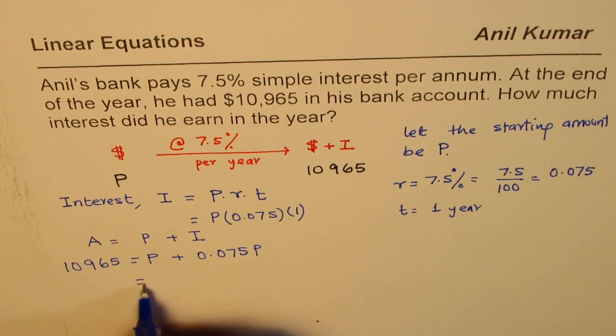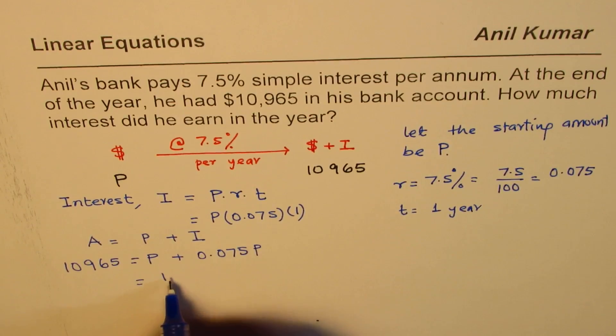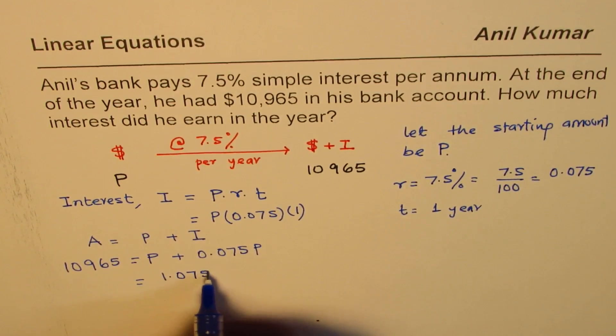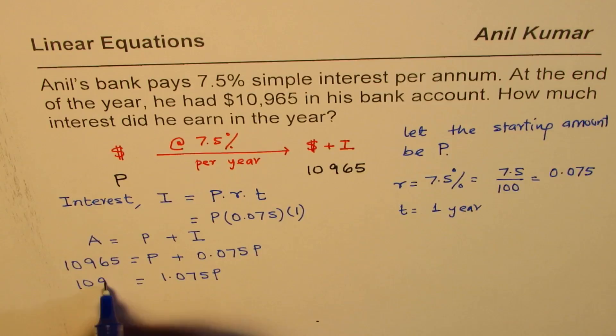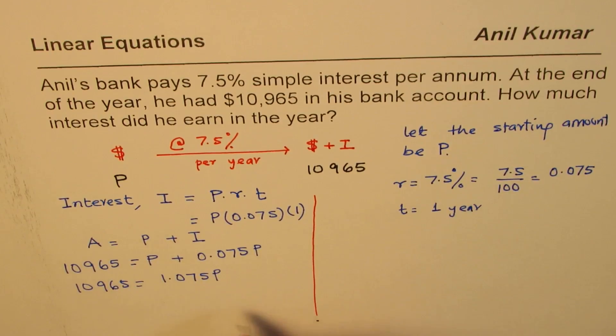Now, you can combine these two. P plus 0.075 which is 1.075 P. So, we get an equation which is 965. So, we combine these two. Now, it is kind of simple. You have to just divide by this to get P.